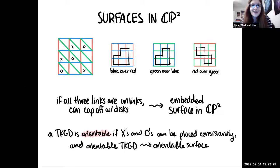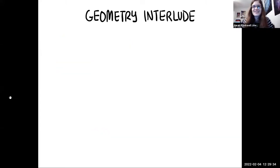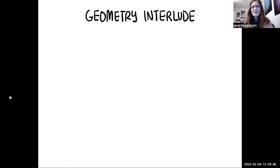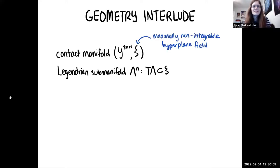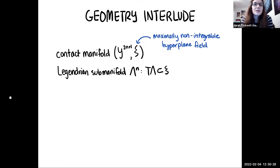Now for a geometry interlude — why is this talk being given in this seminar? These slides are reused from a talk not specifically for symplectic geometers, so I'll go a little fast. For odd-dimensional manifolds, we have contact geometry: a contact manifold is an odd-dimensional manifold equipped with a maximally non-integrable hyperplane field. There is a special subclass called Legendrian submanifolds — if your odd dimension is 2n+1, these have dimension n, and their tangencies are included in the hyperplane field.